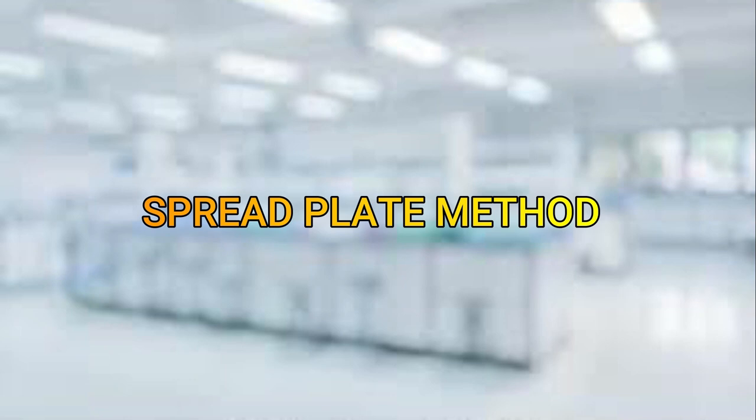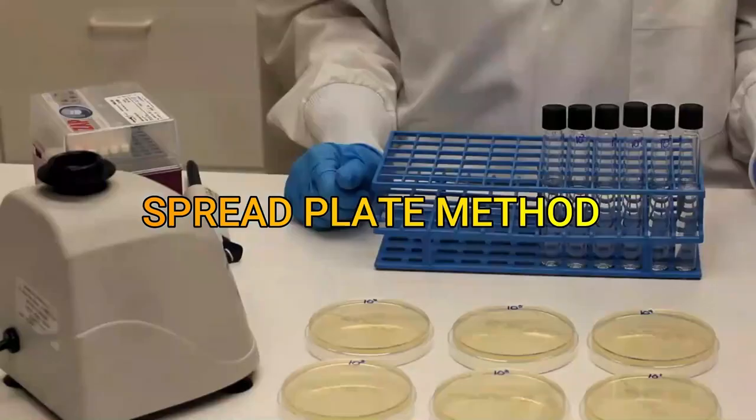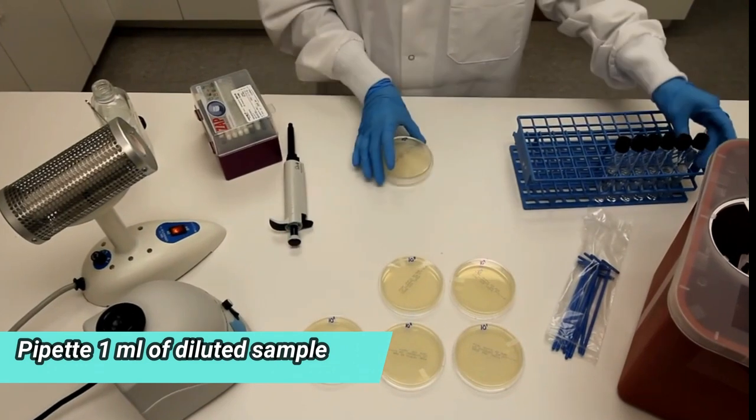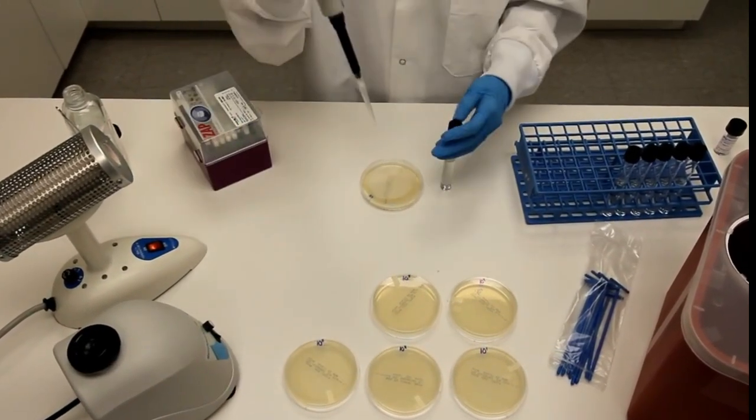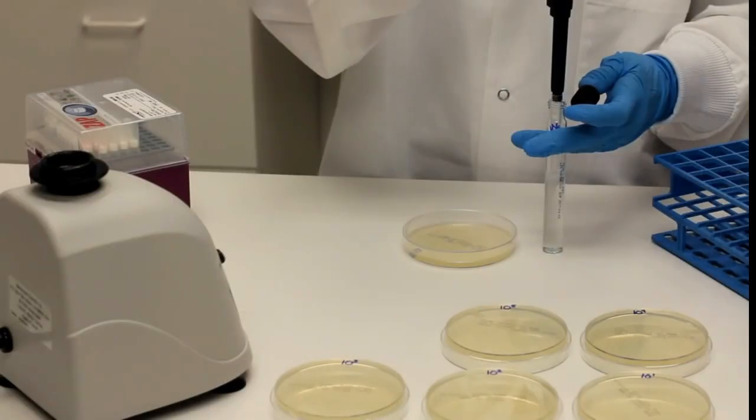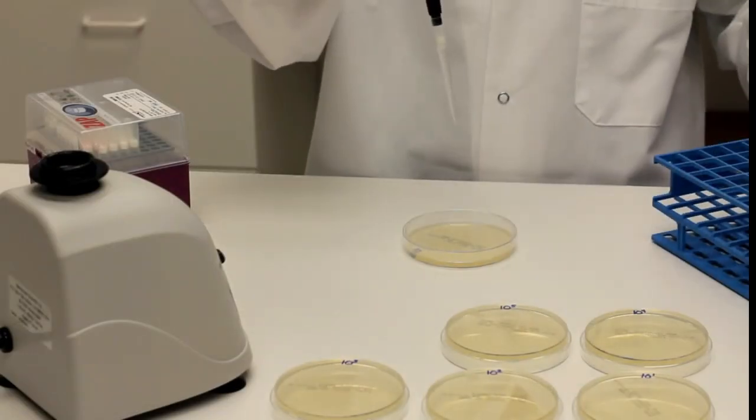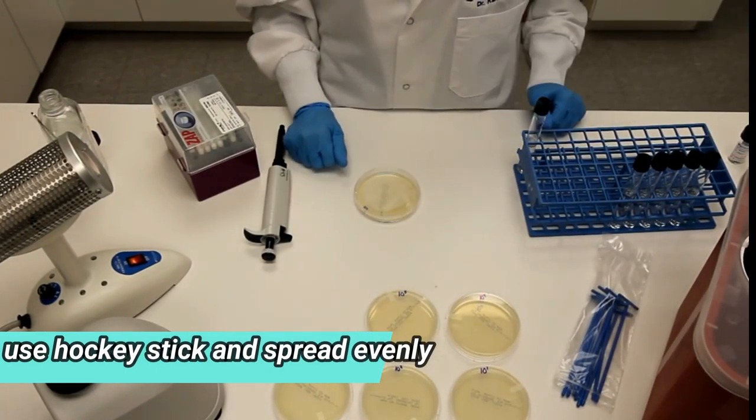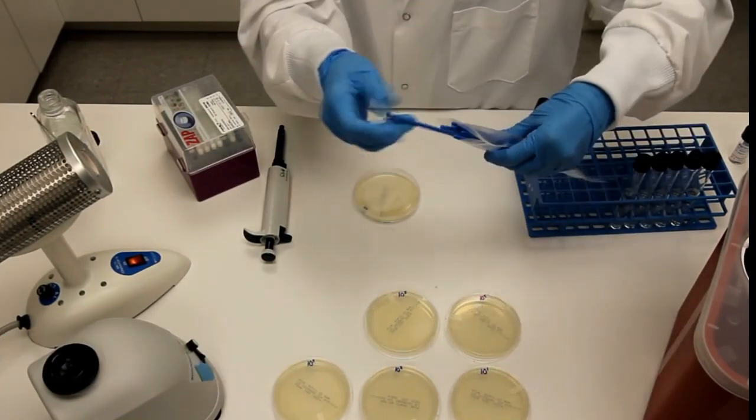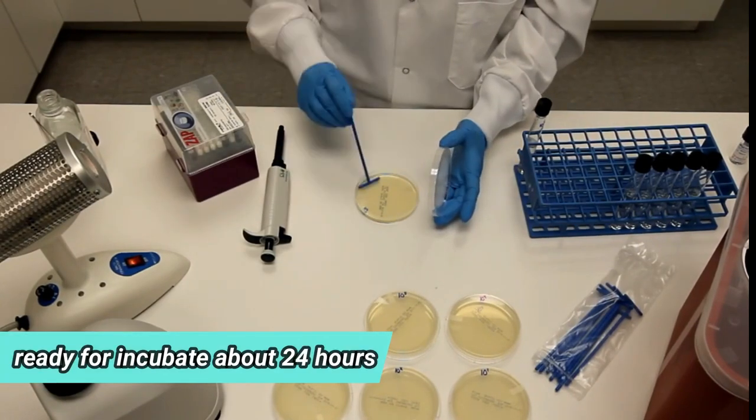Spread plate method. Firstly, we pipette 1 ml of each test tube that contains the different dilution factor from the previous serial dilution to the labelled agar plate. Then, we use the hockey stick to spread it evenly on the agar plate. And it is ready for incubate about 24 hours.